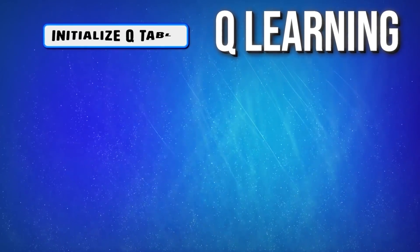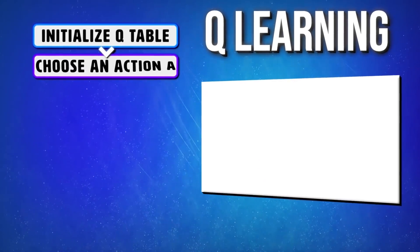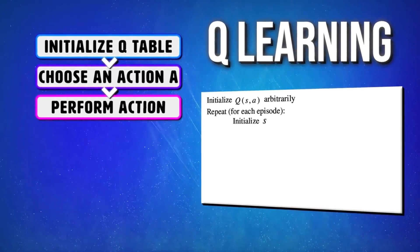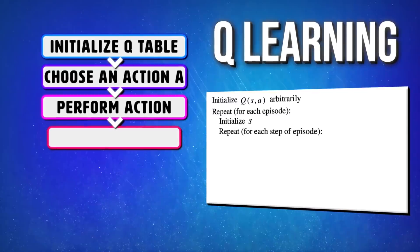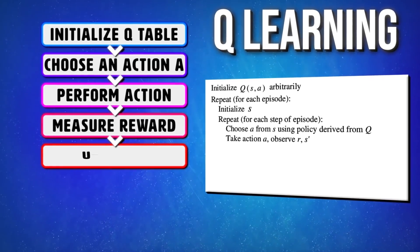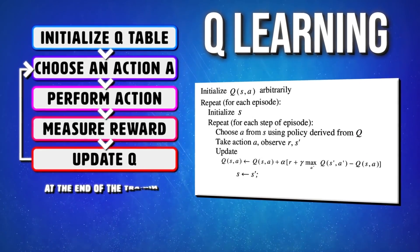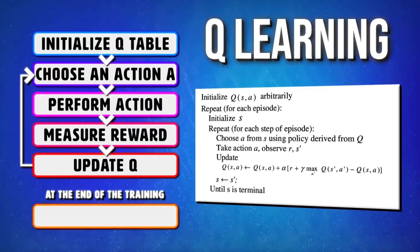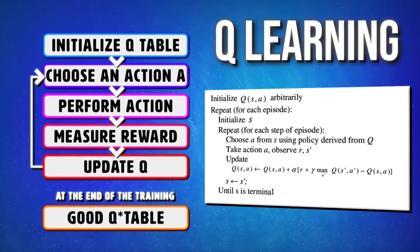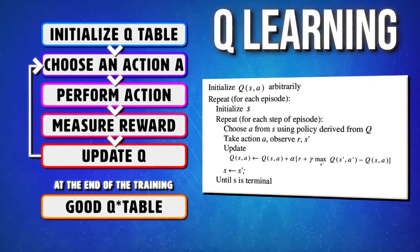In Q-learning, we define a function denoted as Q(S, A). This represents the maximum discounted future reward when we perform action A in state S and continue optimally from that point on. It's also called the action value function since it measures the value of an action. We can think of this function as the highest possible account balance we can have at the end of a training episode after performing action A in state S. It represents the quality of a certain action in a given state. Our possible actions are either buy, sell, or hold. Once we have this Q function, it will rate all three, and we can just pick the action with the highest Q value.